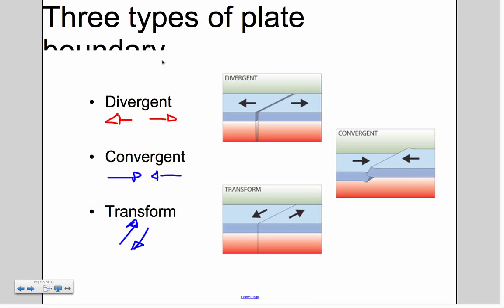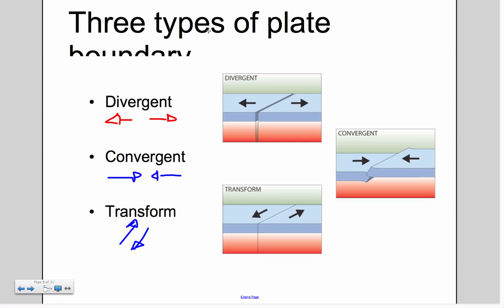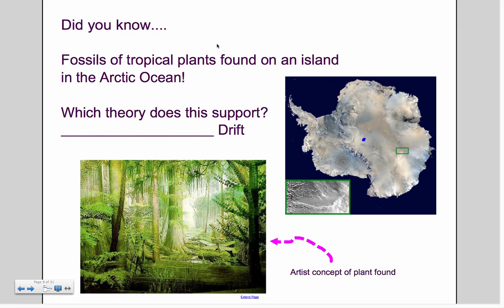There are three types of plate boundaries. There's divergent, convergent, and transform. I'll put a link in the description of the weird little hand gestures that we do for each of these. Divergent, they dive apart from each other. Convergent is where they converge and they meet together. And then transform, if you think like transformers, they slide past each other.